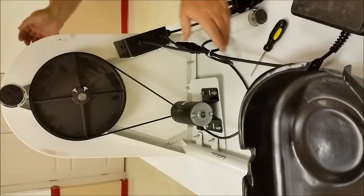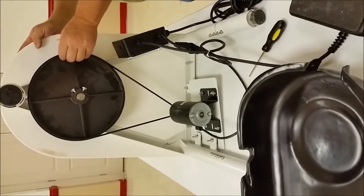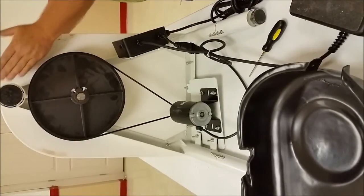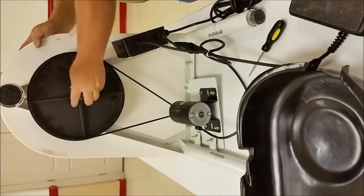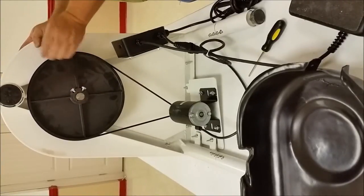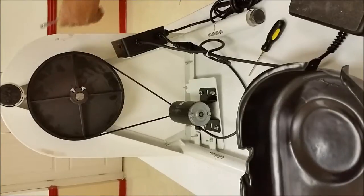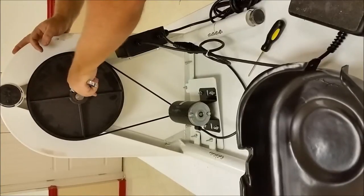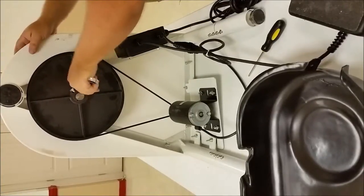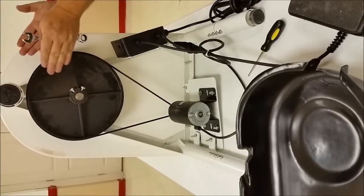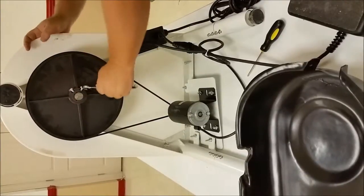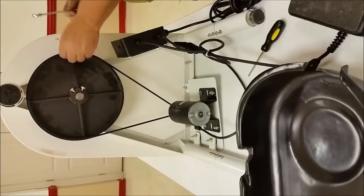While you have it open, inspect that the belt is riding in the center of the wheel head pulley. If it's sitting to one side, you can adjust that by loosening these two bolts to the wheel head pulley and sliding it backward or forward as needed. This one is right in the center.